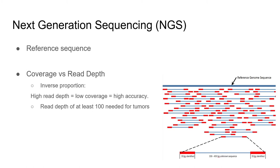Read depth is how many times a single nucleotide or a region within your reference genome was sequenced by the NGS platform. The relationship between coverage and depth is inversely proportional — as you increase your read depth, you decrease your coverage but increase your accuracy at finding a mutation. Decreasing read depth will decrease your accuracy but increase your overall coverage of the genome. It is recommended to have a read depth of at least 100 for tumor genetics.